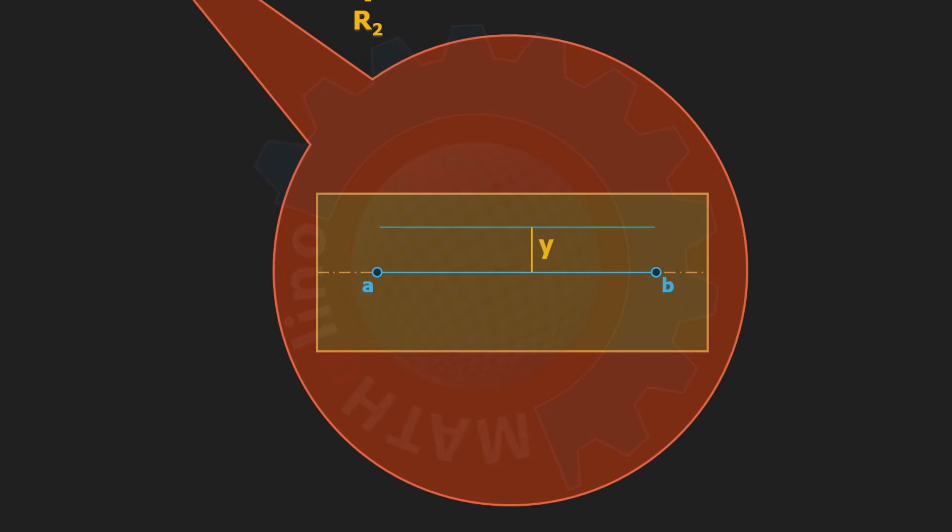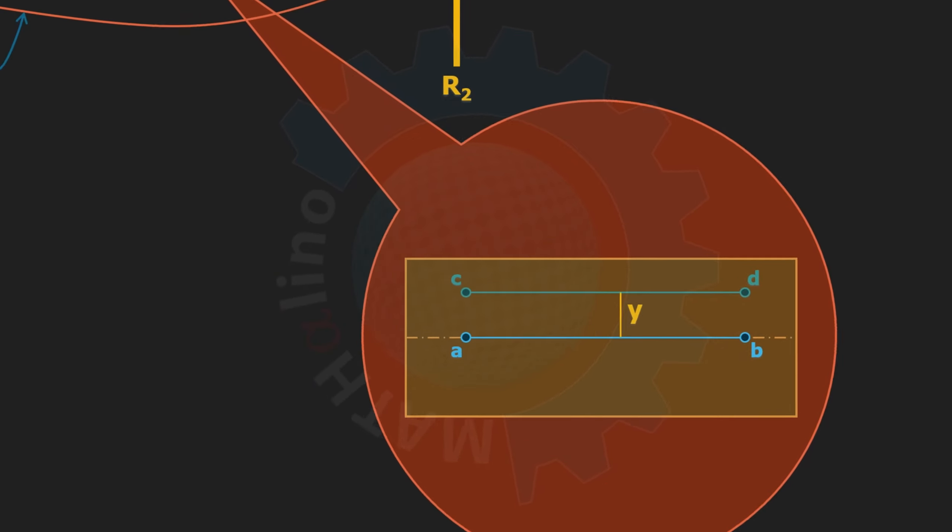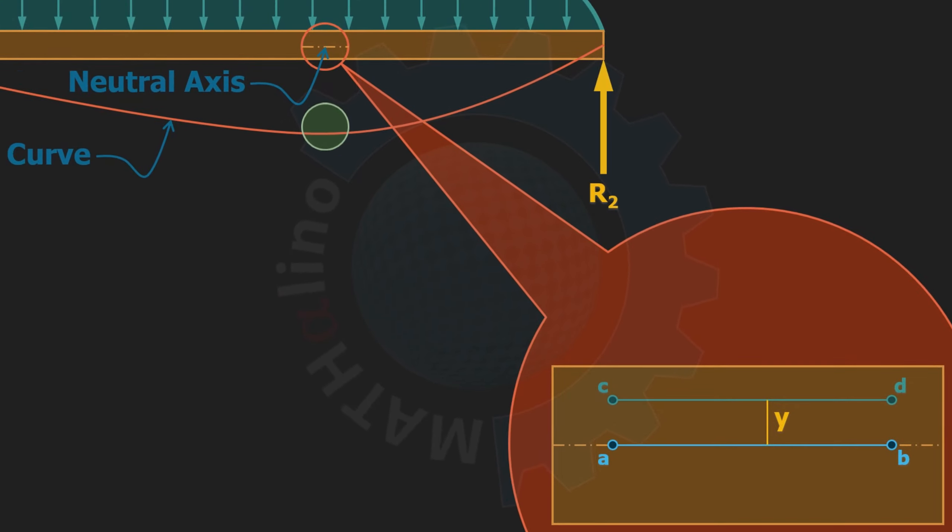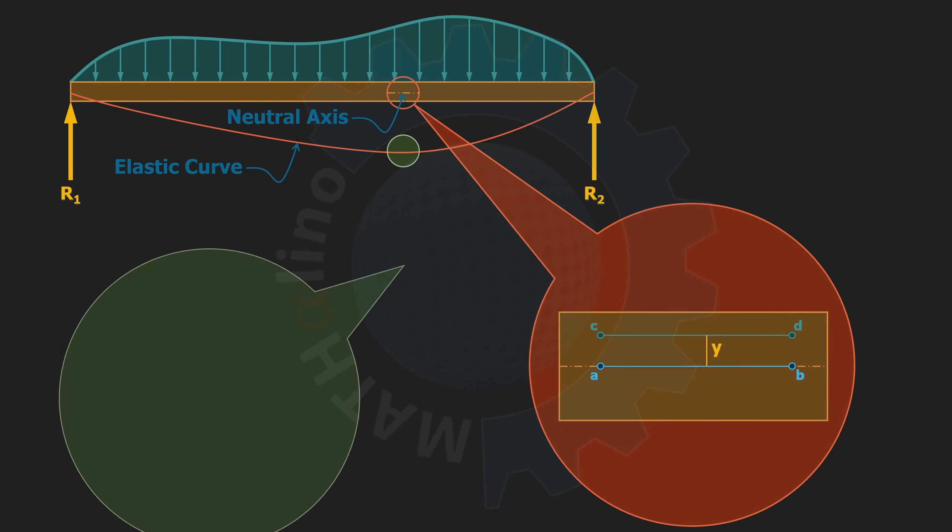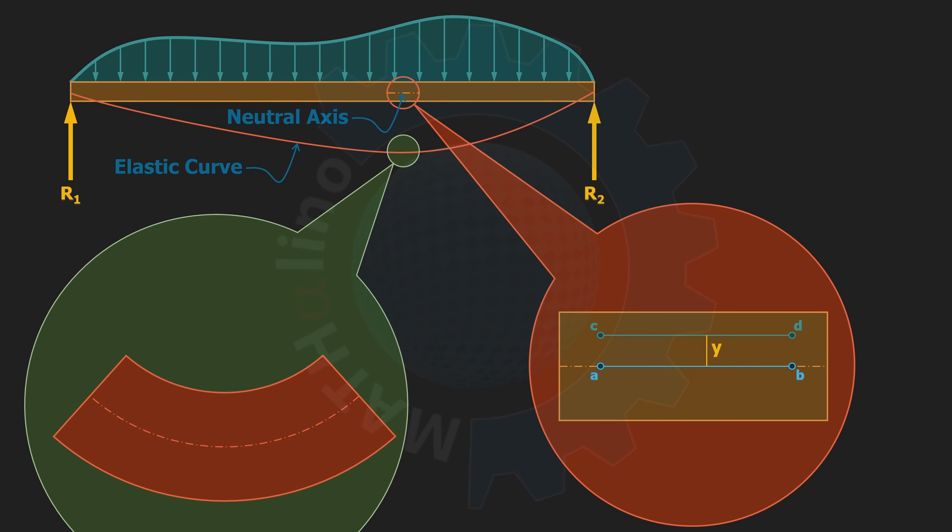Let us consider another fiber of the same length as ab and let us call it fiber cd. This portion of the beam in the deformed state can be assumed to be circular. Note that in general this is not really circular.